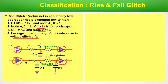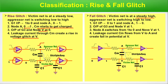For fall glitch: victim net is at steady high, aggressor net switches from high to low. Node A transitions from 1 to 0, while node V is at constant 1. Leakage current flows through CM from V to A — opposite direction to the rise glitch case — and creates a fall in potential at V. Although the victim net should remain at a steady high one state, its voltage falls. That is the fall glitch.